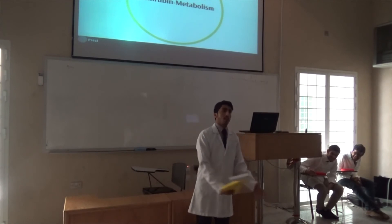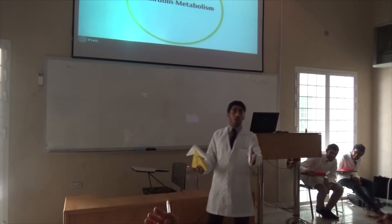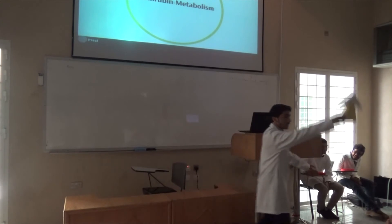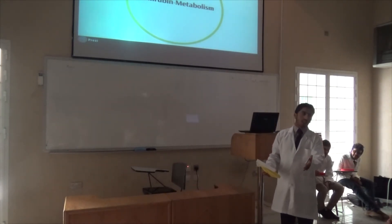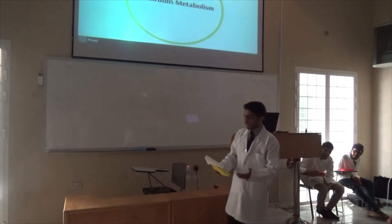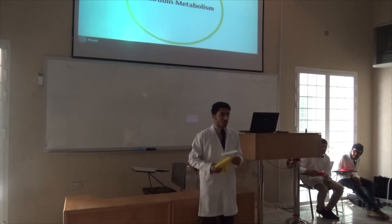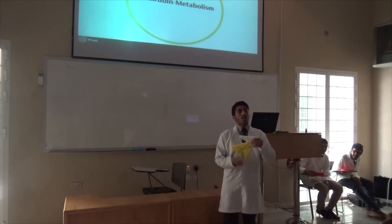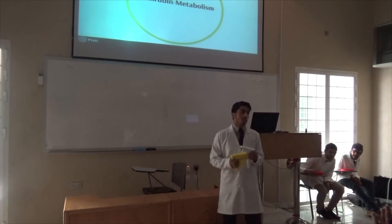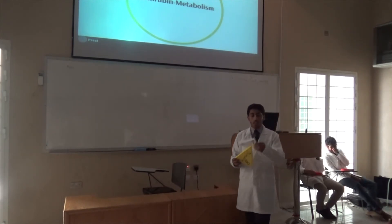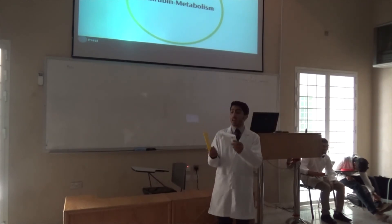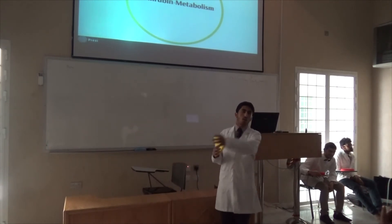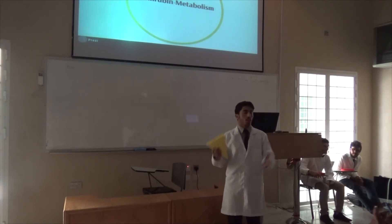The conjugated bilirubin moves from the liver to the second part of the duodenum through the common bile duct. Then it moves through the intestine and reaches the last part of the small intestine or the beginning of the large intestine. In the large intestine, there is a bacteria that removes the glucuronic acid attached to the bilirubin, transforming it into urobilinogen.